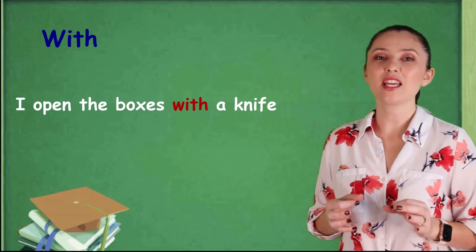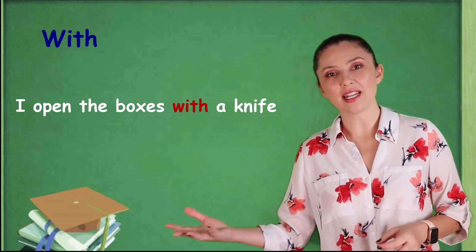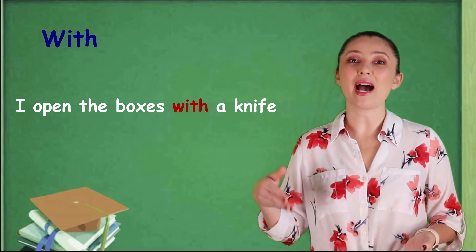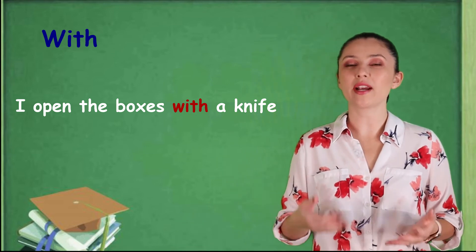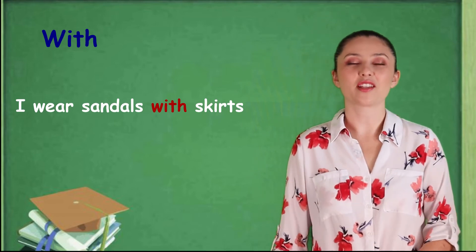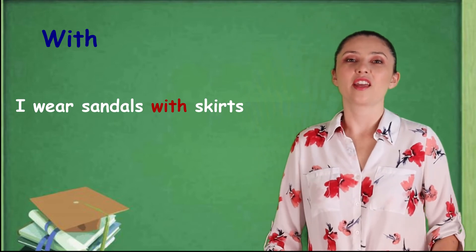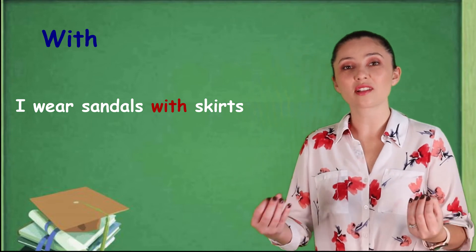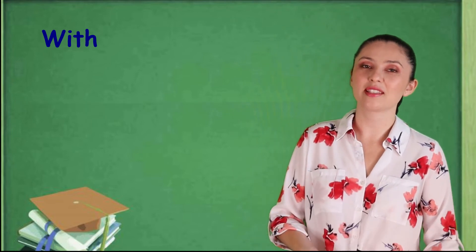You can also use with. So, when we want to say by means or using. So, for example, the example with the boxes. I open the boxes with a knife. So, here I can say by using a knife or with a knife. I wear sandals with skirts. So, one accompany the other. And also, I use skirts with sandals.